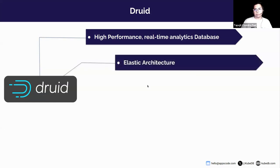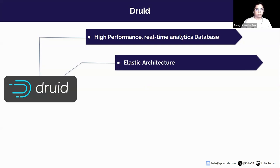Druid has a very elastic architecture, which means its components are very loosely coupled. It has separate components for ingestion, queries, orchestration, and external dependency deep storage, which helps it scale up and down very quickly.